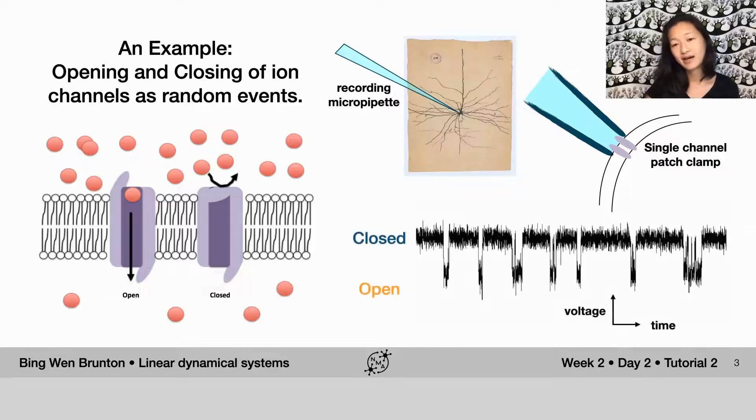And if you did that, here's what you would see. So here is an example of what the voltage in time of a single ion channel would look like, where you can see that it's a little bit stochastic because temperature is not zero Kelvin.